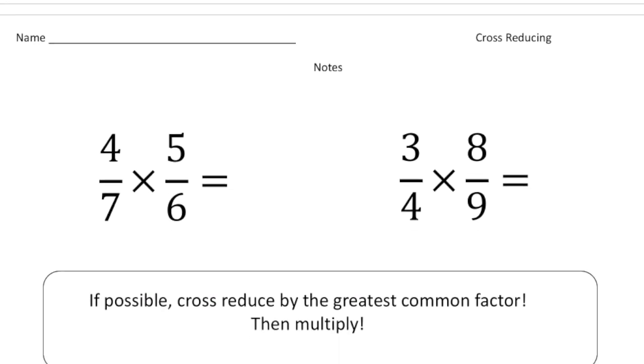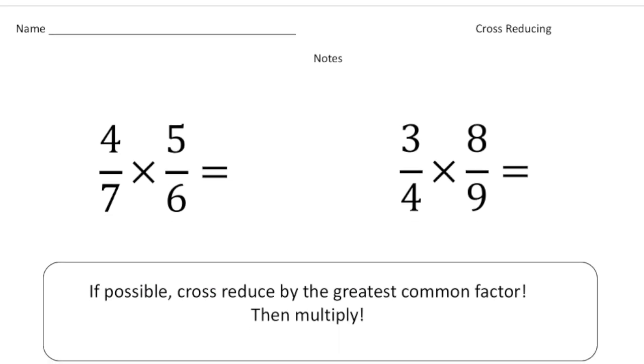And talk about something called cross reducing. Cross reducing is a way to really make your life easy when it comes to multiplying fractions. What you do to cross reduce is if possible, cross reduce by the greatest common factor. Let me show you what I mean by that.